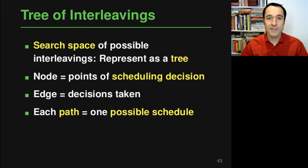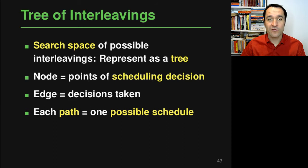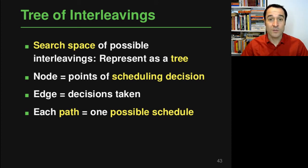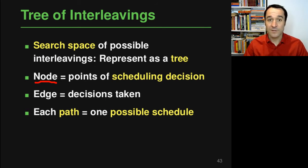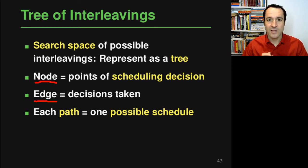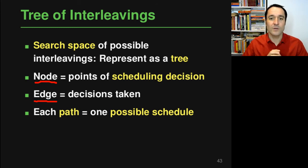To reason about the different interleavings a program may have, we need some representation of this search space. This space can be represented as a tree of interleavings, where every path from the root to a leaf node represents one possible schedule. Nodes in this tree represent scheduling decisions — every point in the program where this thread or that thread may execute next. The edges correspond to decisions taken, with at least two outgoing edges per node, so that every root-to-leaf path represents one possible interleaving.